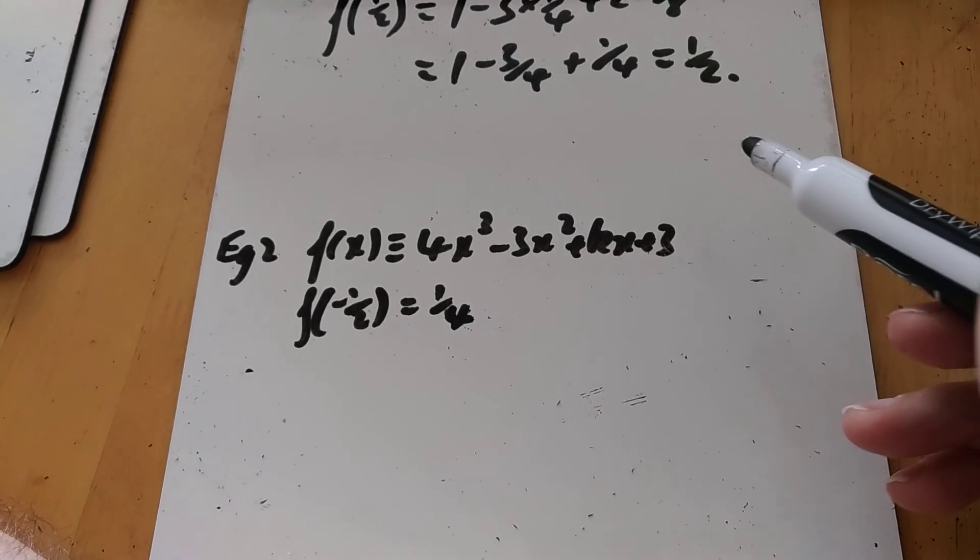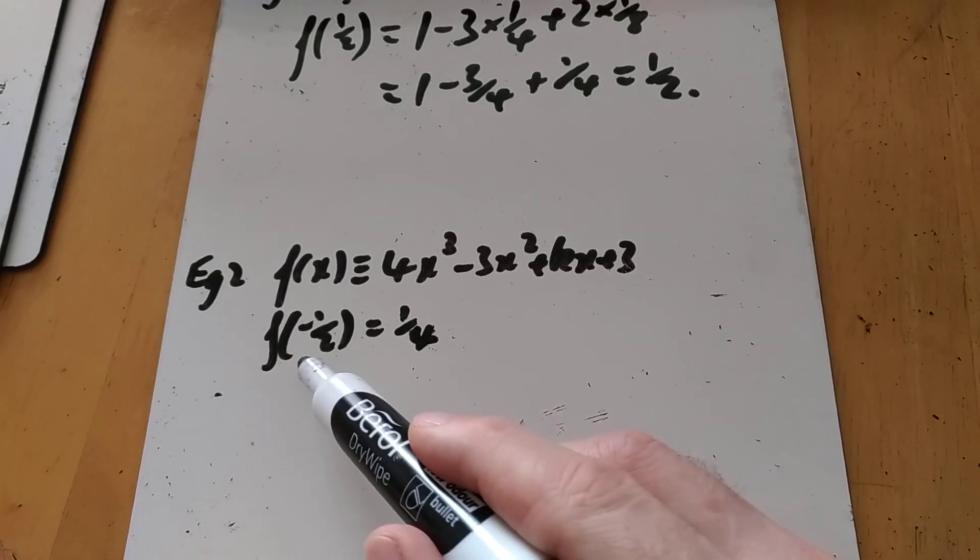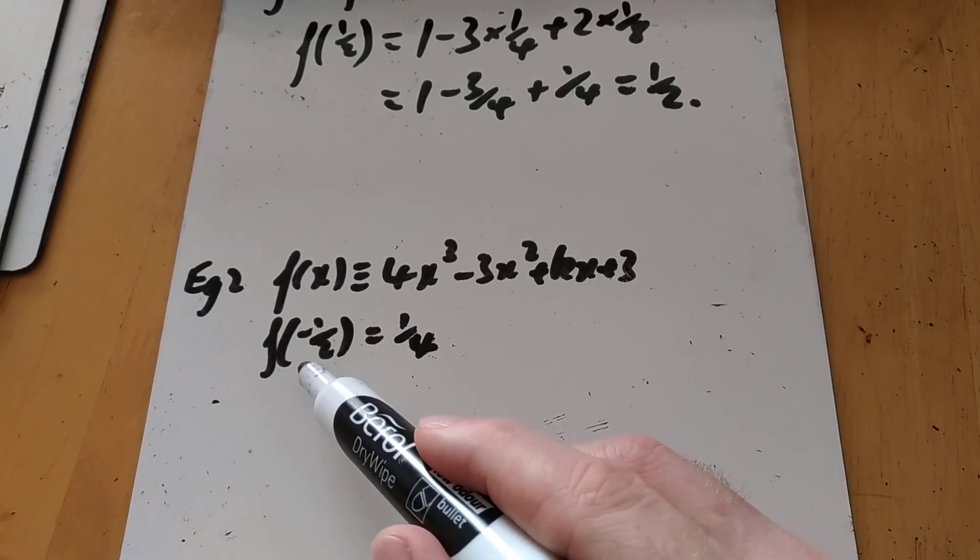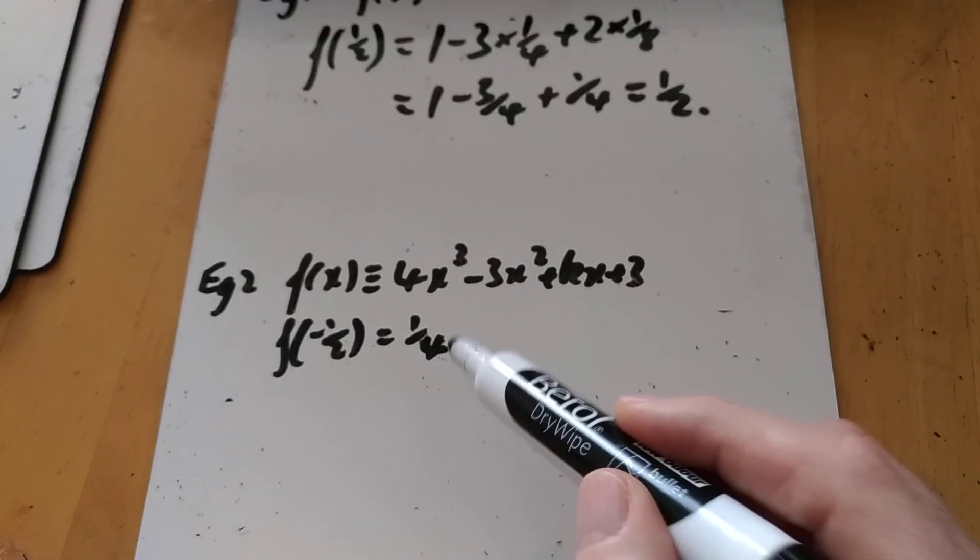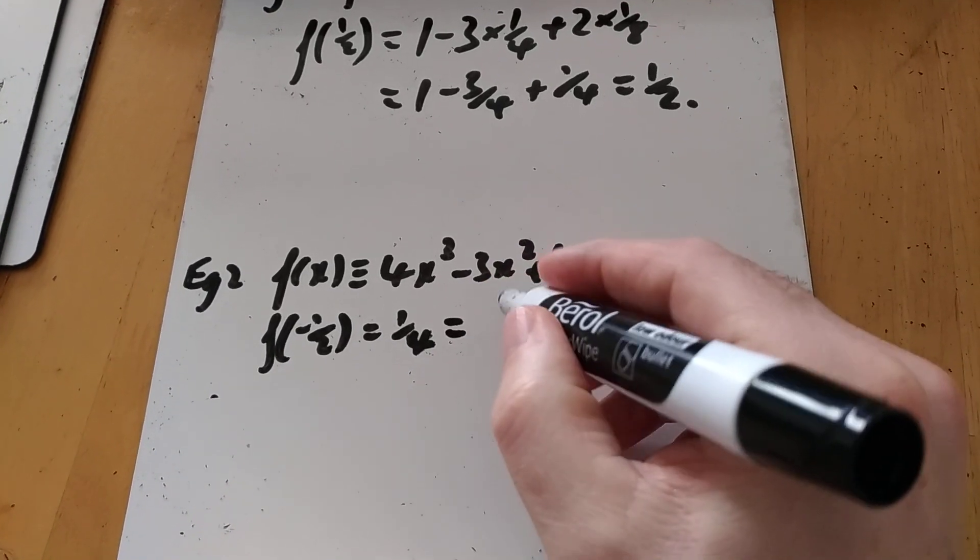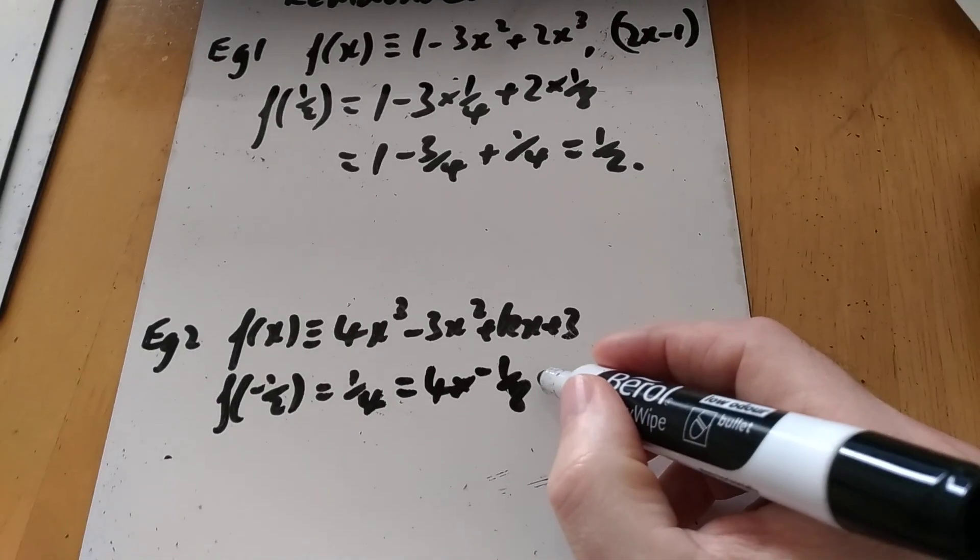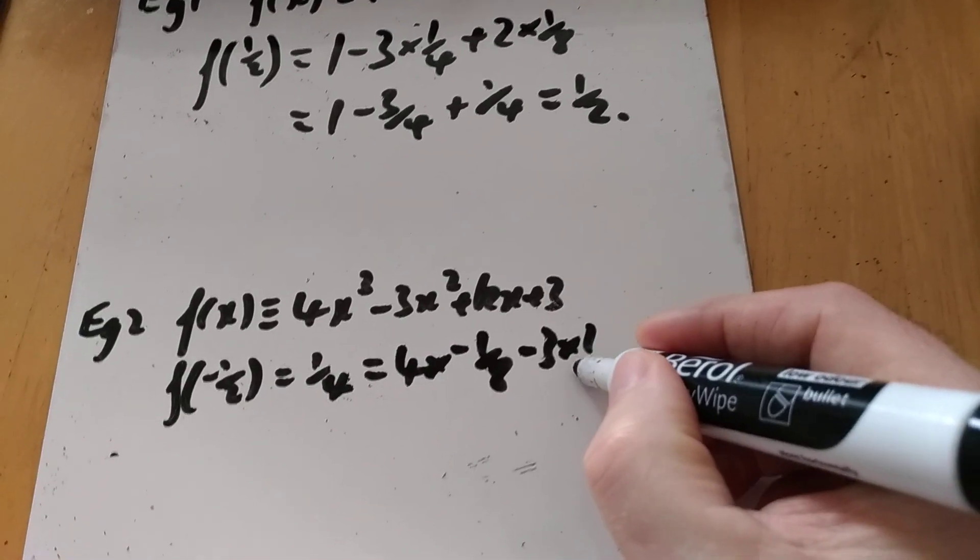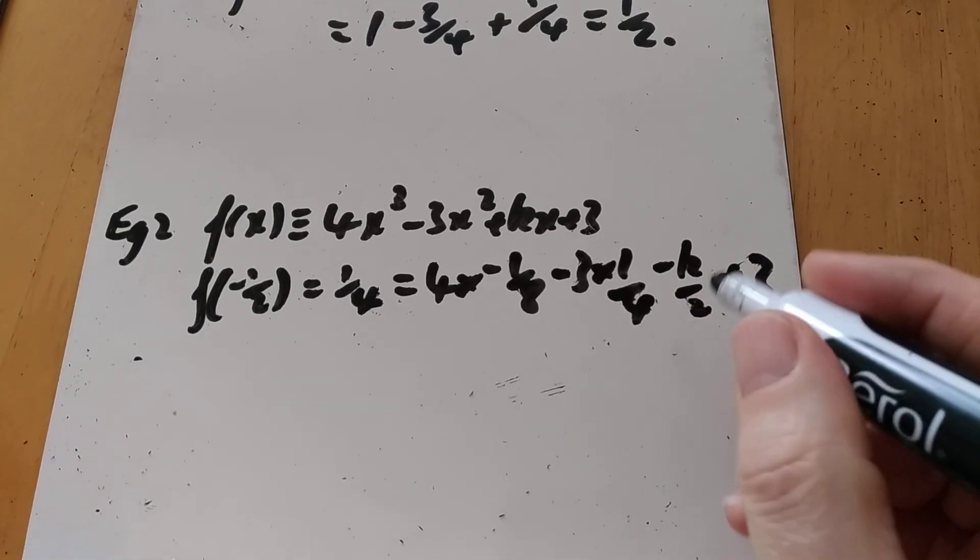Simply use the remainder theorem. If I'm divided by 2x plus 1, the x value that makes the bracket equal to 0 is minus a half, and so if I write f minus a half equals a quarter, there's my first mark. And then stick minus a half in. So I get 4 times minus an eighth minus 3 times a quarter, minus k over 2, and plus 3.